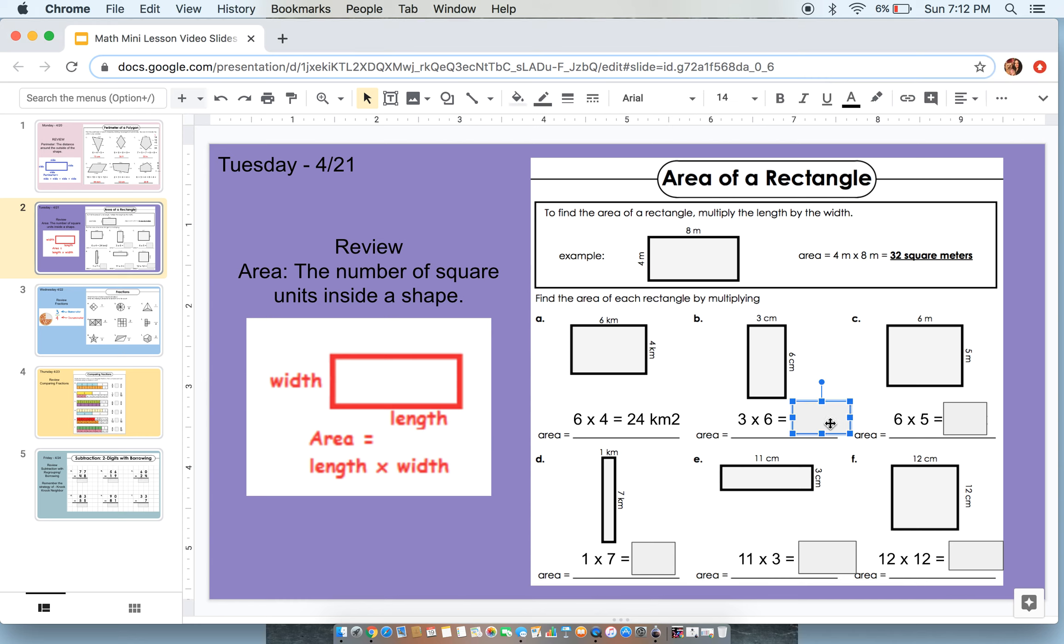Let's keep going. So 3 is our length and 6 is our width. 3 times 6 is equal to 18 centimeters squared.